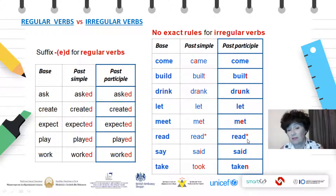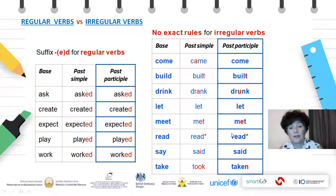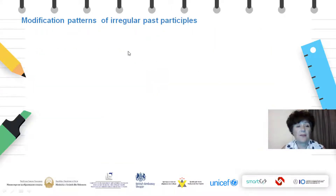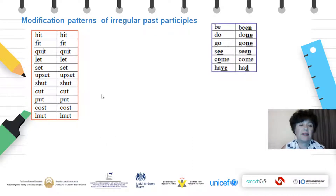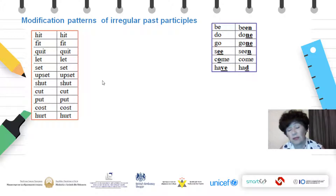Read has been marked because although it is written the same way, the pronunciation is different: read, read, read. So out of context, you wouldn't know whether the verb is used in one or another form. There is no exact rule for irregular verbs — that is something that you will learn by practice. We are just going to have a look at different modification patterns so that you are aware there are really different patterns.